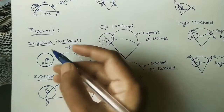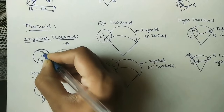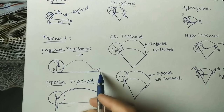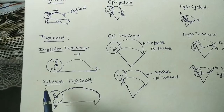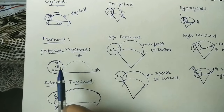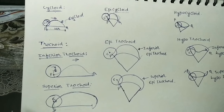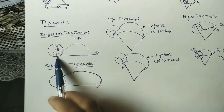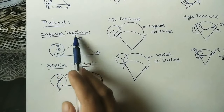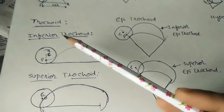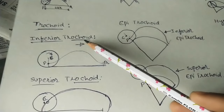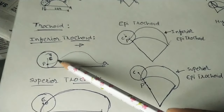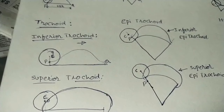When the circle rolls in this direction, the path of point P, which is inside the circle, comes out like this. This curve is called a trochoid. Since P is inside the circle, it is called an inferior trochoid. In today's class we will discuss about the inferior trochoid — meaning P is inside the circle.